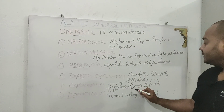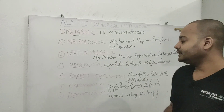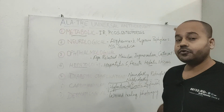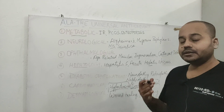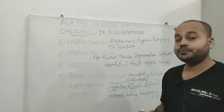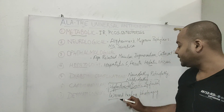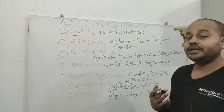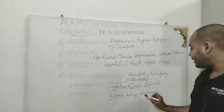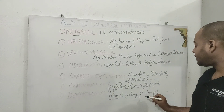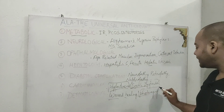Better blood flow through improved nitric oxide synthesis also helps with erectile dysfunction. Alpha lipoic acid is also good for your skin — because it helps bring down advanced glycation end products, it can be very useful for wound healing by improving sugar control and reducing oxidative stress. It can also be very useful for photo aging.